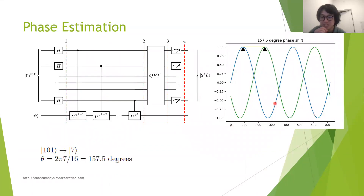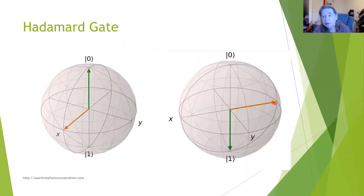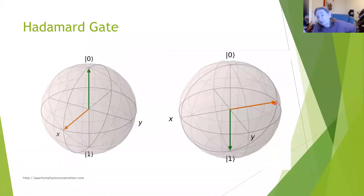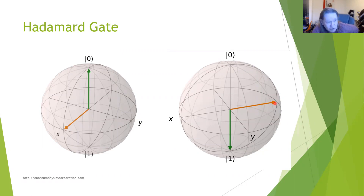Jerry was wondering if that was entanglement. It's not, because we only have one qubit. Entanglement takes two — it's like dancing. The Qiskit textbook shows multiple qubits as a set of Bloch spheres. You can do that if they're not entangled. And what I concluded is that entanglement, as near as I can see, is not part of the story for Shor's algorithm.